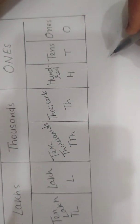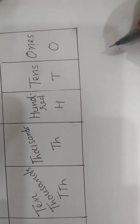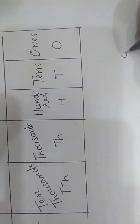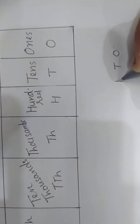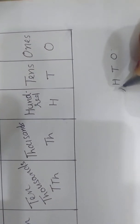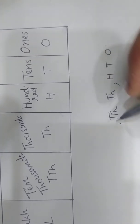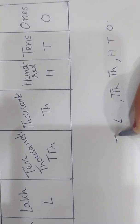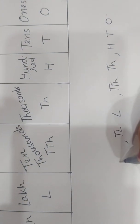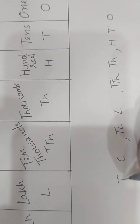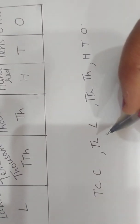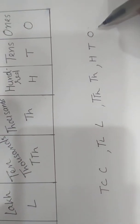We use comma to separate the periods. Start from right: ones, tens, hundred, comma, thousand, ten thousand, comma, lakh, ten lakh, comma, crore, ten crore. We use comma to separate the periods. Start from the right.